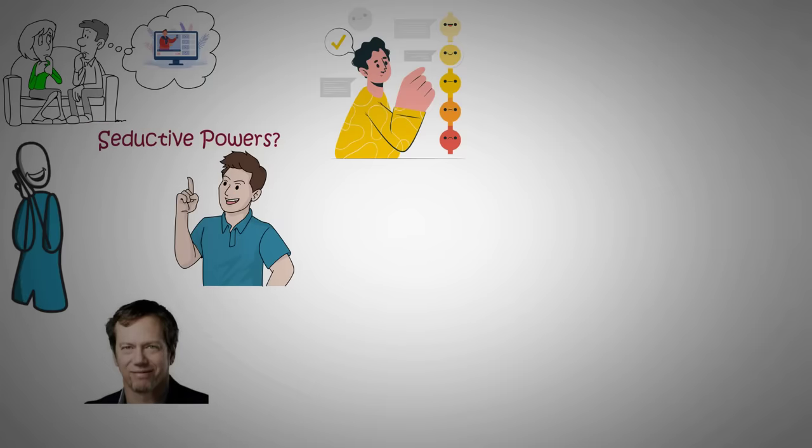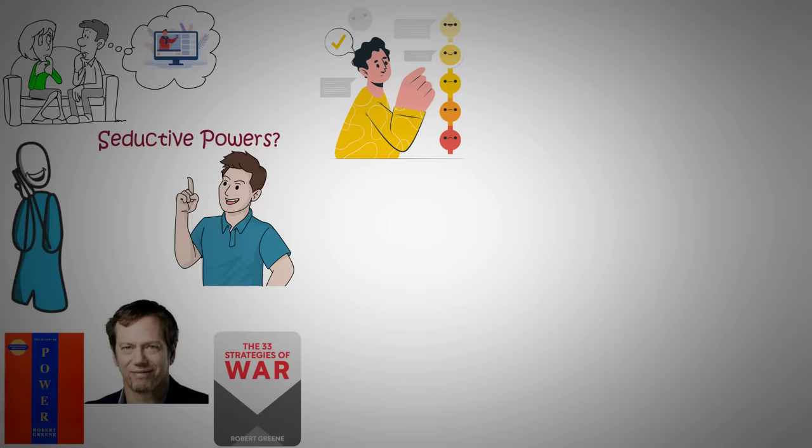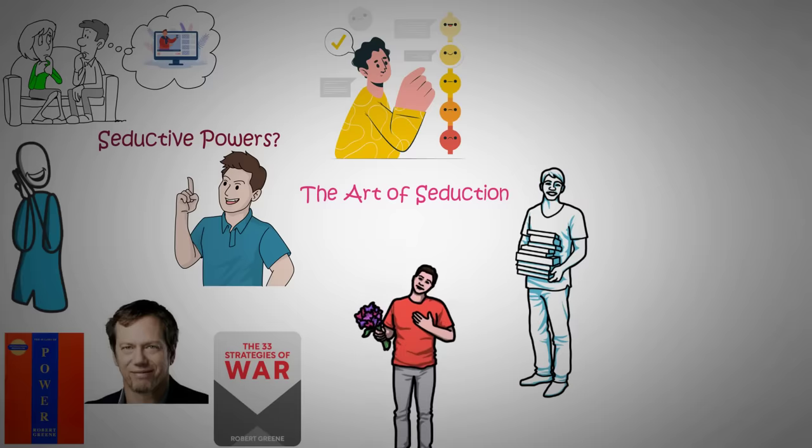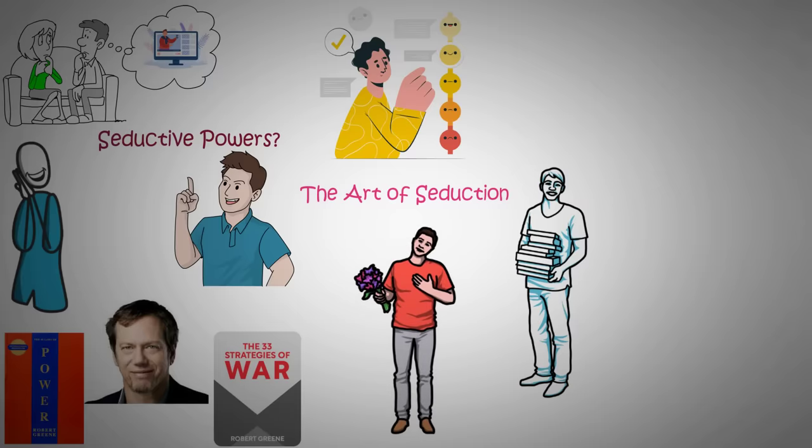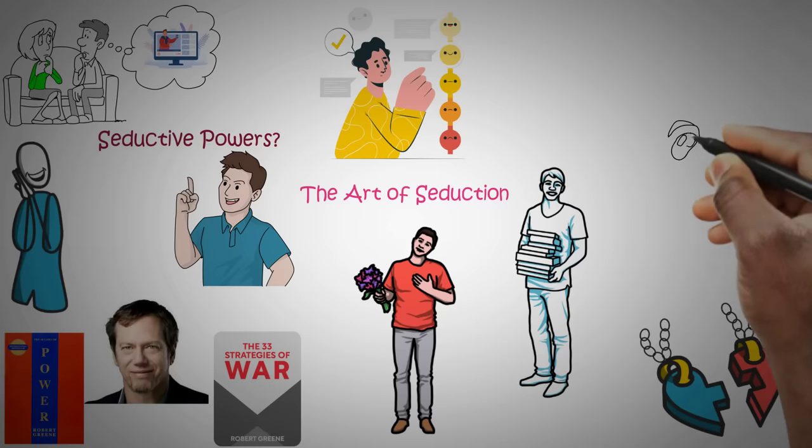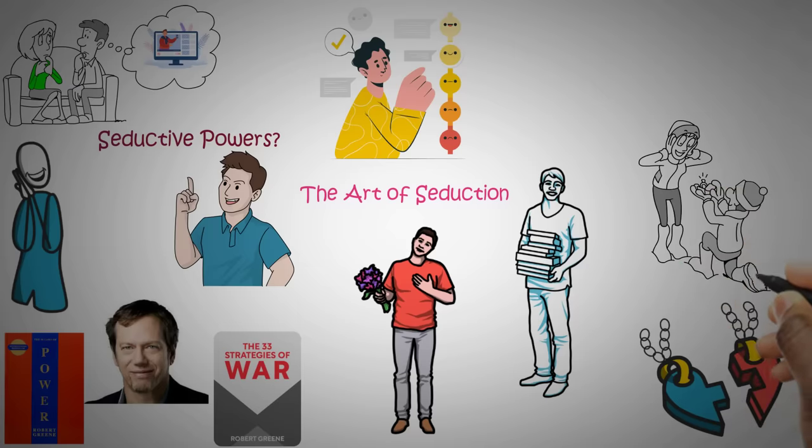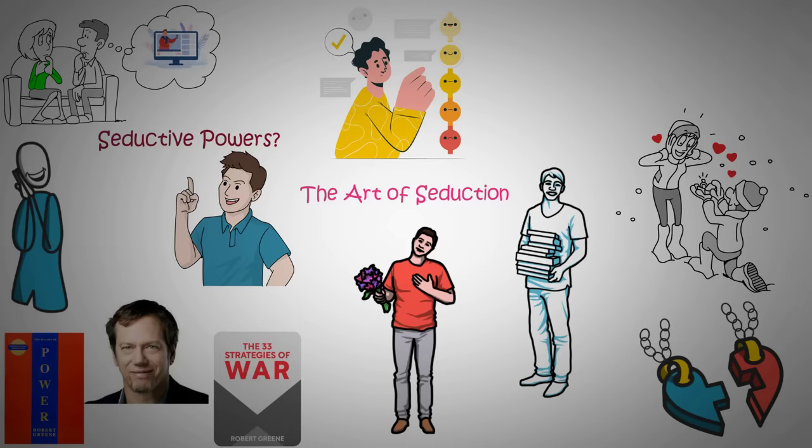Robert Greene, the brilliant mind behind The 48 Laws of Power and The 33 Strategies of War, is back with another game-changing guide: The Art of Seduction. In this electrifying journey, Greene spills the secrets to understanding the psychology of attraction, giving you the keys to successfully woo potential lovers or devoted followers. Let's be real, who doesn't want the intoxicating thrill of being adored, the power to bend someone's will to your desires, and the irresistible allure of becoming a seduction maestro?